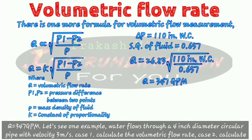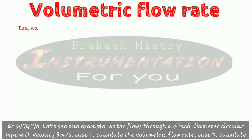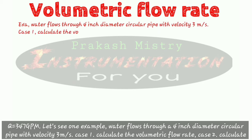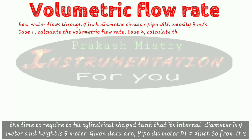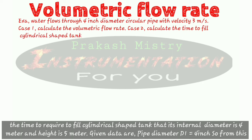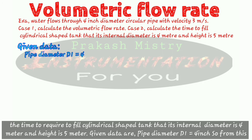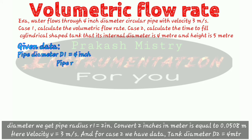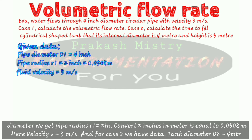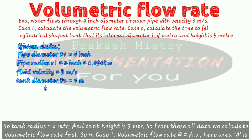Let's see one example. Water flows through a 4 inch diameter circular pipe with a velocity of 3 meters per second. Case one: calculate the volumetric flow rate. Case two: calculate the time required to fill a cylindrical tank with internal diameter 4 meters and height 5 meters. Given data: pipe diameter D1 equals 4 inches, so pipe radius R1 equals 2 inches, which converts to 0.0508 meters. The velocity V equals 3 meters per second. For case two: tank diameter D2 equals 4 meters, so tank radius equals 2 meters and tank height is 5 meters.